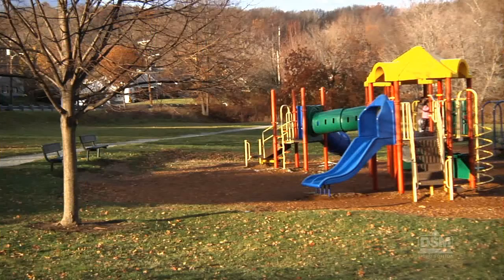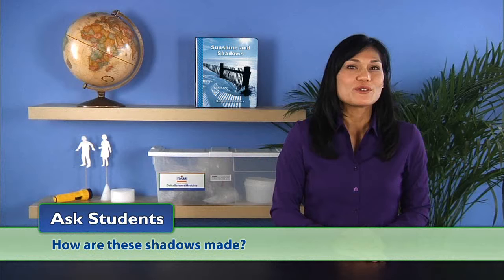Invite students to point out the shadow they find the most interesting. Then, stop in one place with a variety of shadows. Ask students, how are these shadows made? Students should recall that the shadows are formed when the objects they see block the light from the sun.